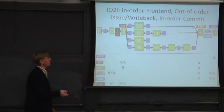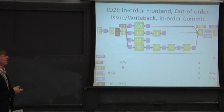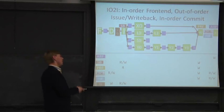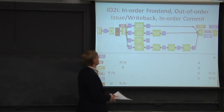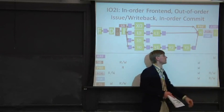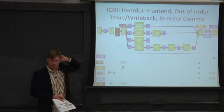In order issue, out of order. In order front end, out of order issue, out of order write back, and in order commit. So the middle portion of the pipe here is all out of order. And then finally, we commit in order and we fetch in order.